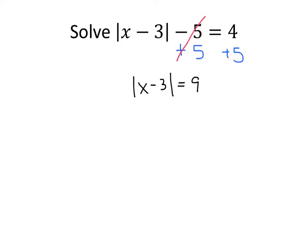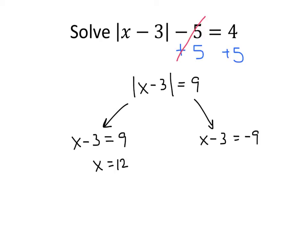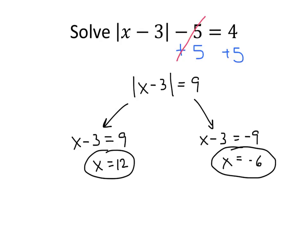And then we can do this just like the previous example. We have two possibilities. One is that the thing inside the absolute values is just 9, and the other is that the thing inside the absolute values is minus 9. In this case, we get the solution x equals 12. And in this case, we get the solution x equals negative 6. And that's it.